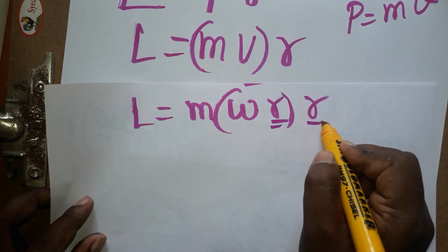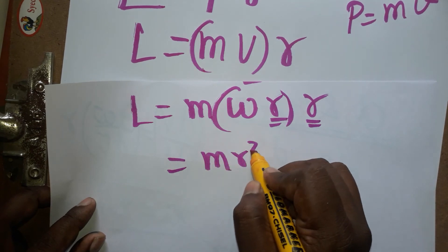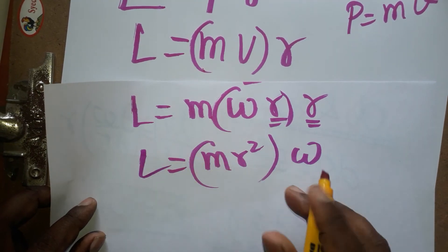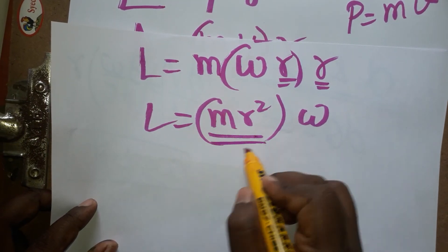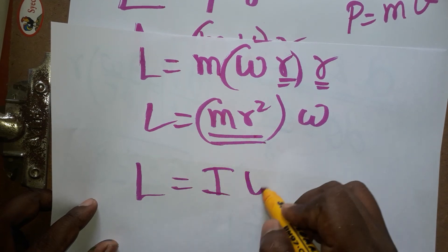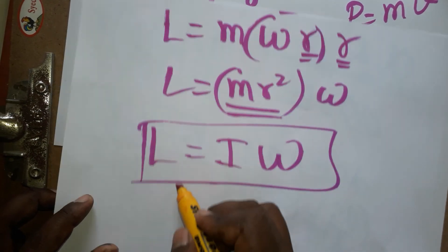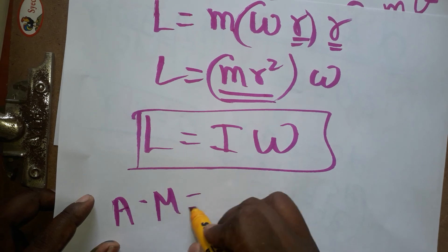So mr squared times omega is called angular momentum. This is going to be inertia. L is equal to I times omega. So angular momentum is equal to moment of inertia times angular velocity. So this is the relation.